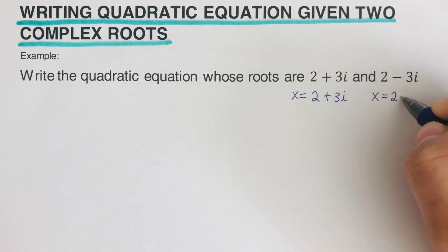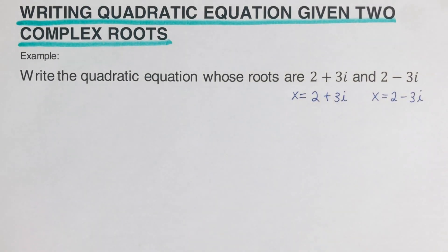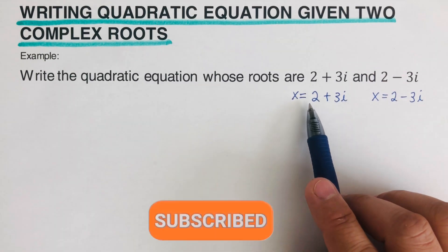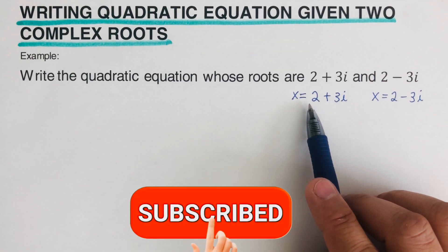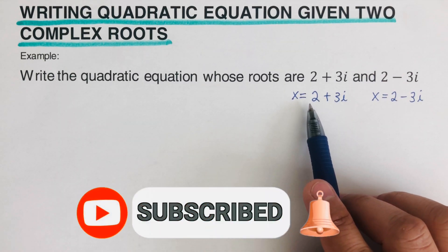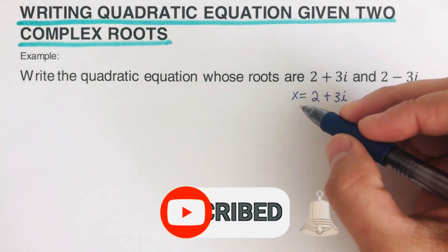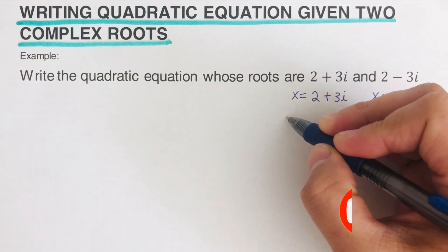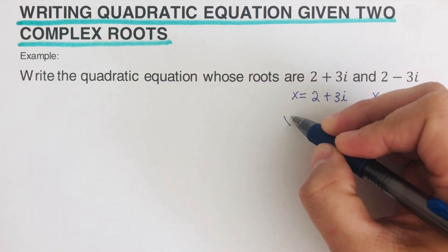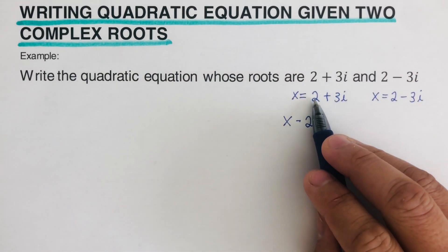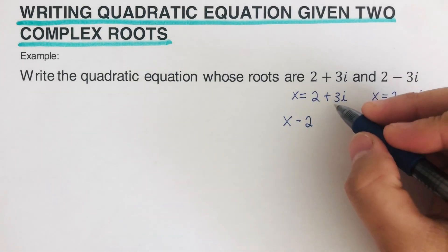Now we change these into factored form using the zero product property backwards. For the first root, we switch the sign of the real part, so we get (x − 2 + 3i).